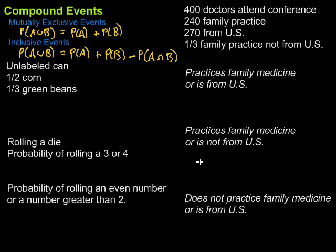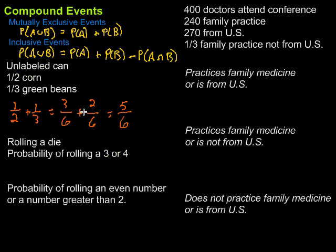Let's look at an example. We have an unlabeled can — we know it's some type of food. The probability it's corn is one-half and the probability it's green beans is one-third. We want to know the probability that it's either corn or green beans. That's mutually exclusive because it can't be both, so we just add: one-half plus one-third. With a common denominator of six, that's three-sixths plus two-sixths, giving us five-sixths.